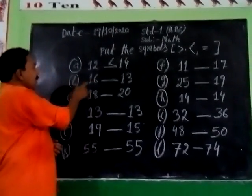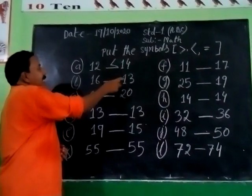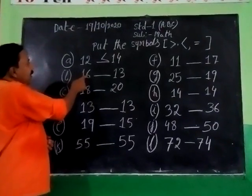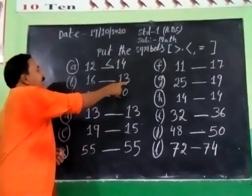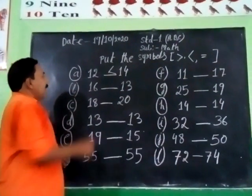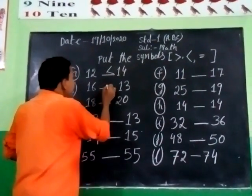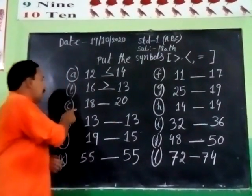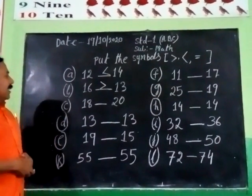Number 9: 16 and 13. 16 is greater, 13 is less. 14 is less than 15.